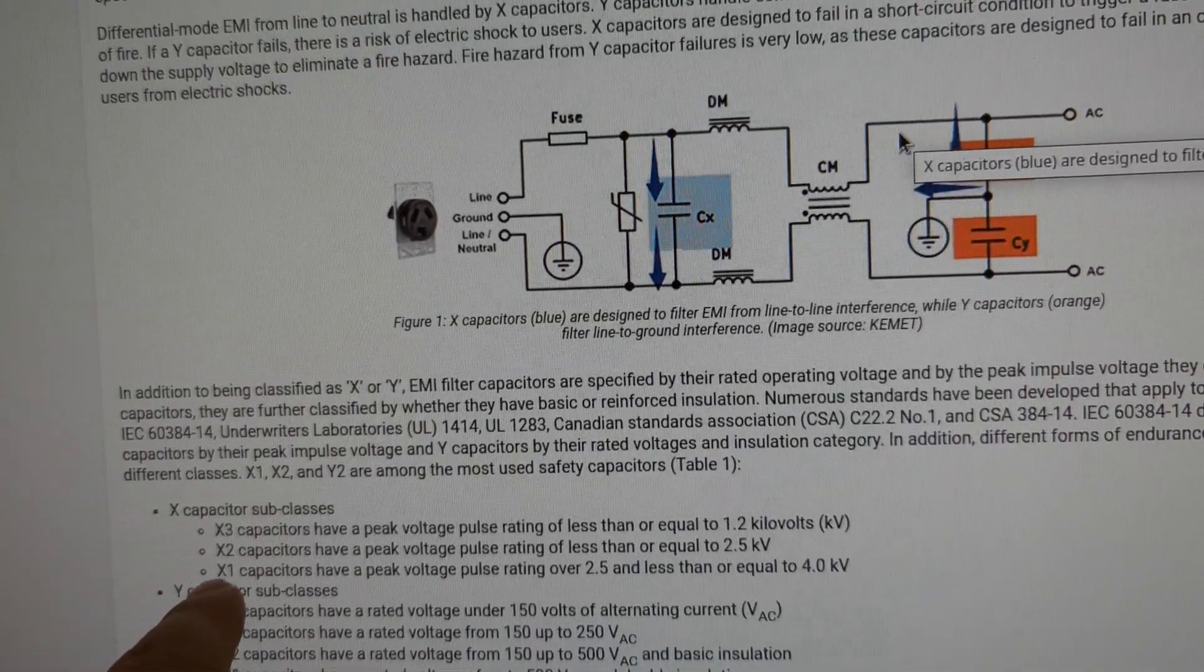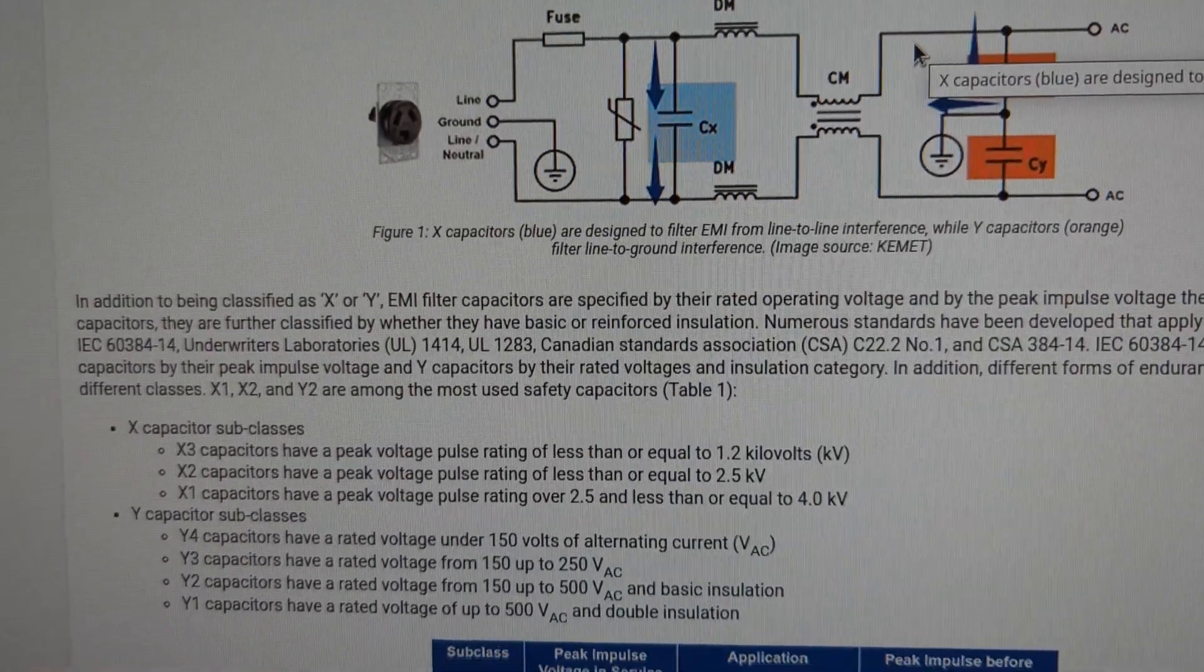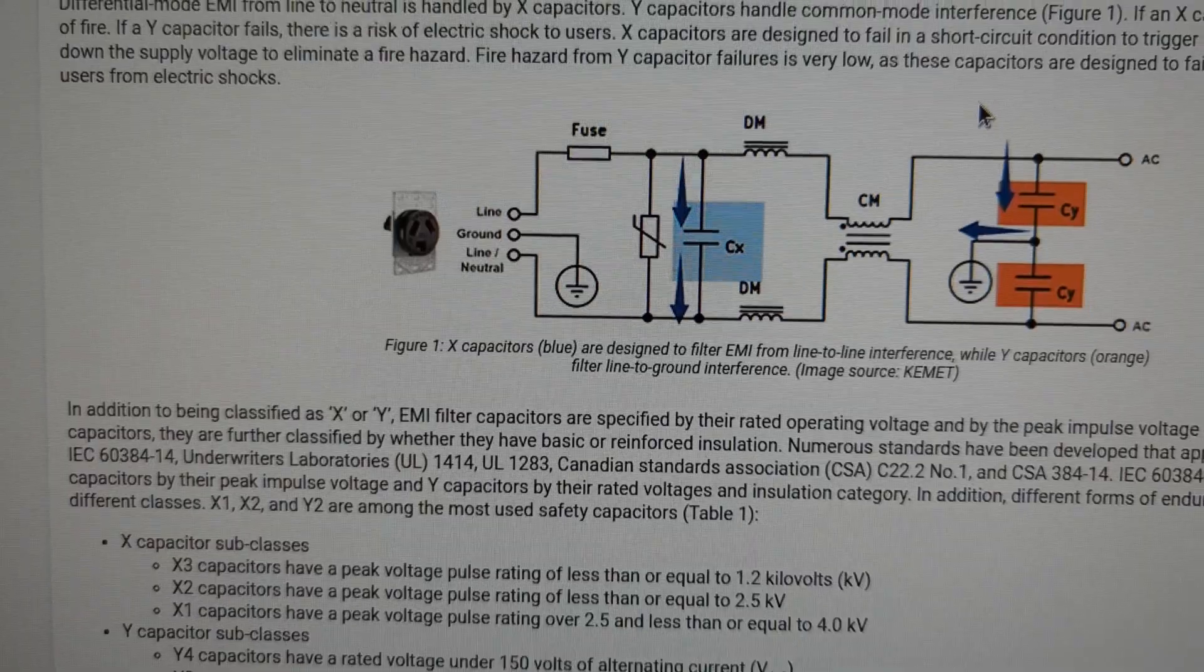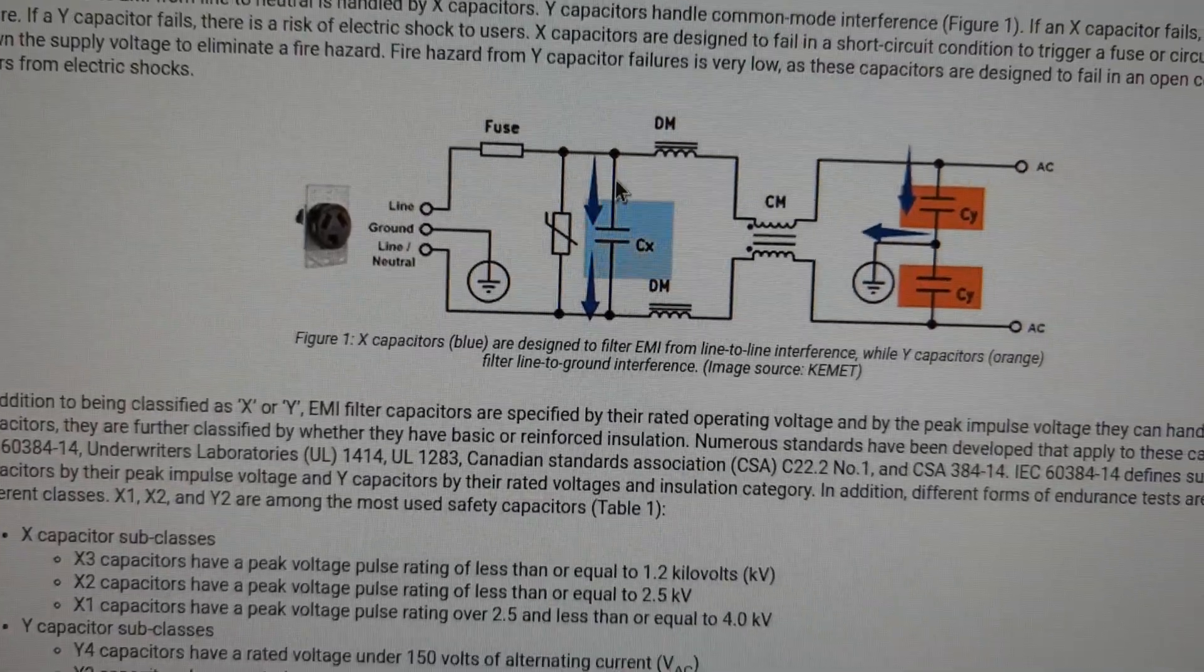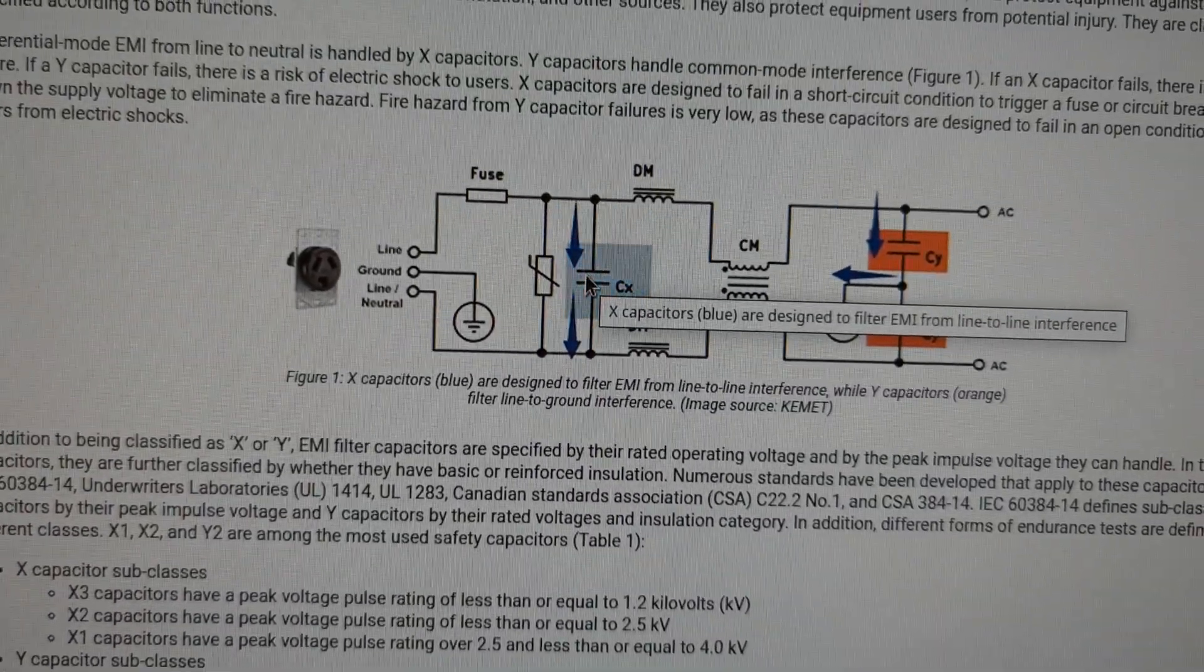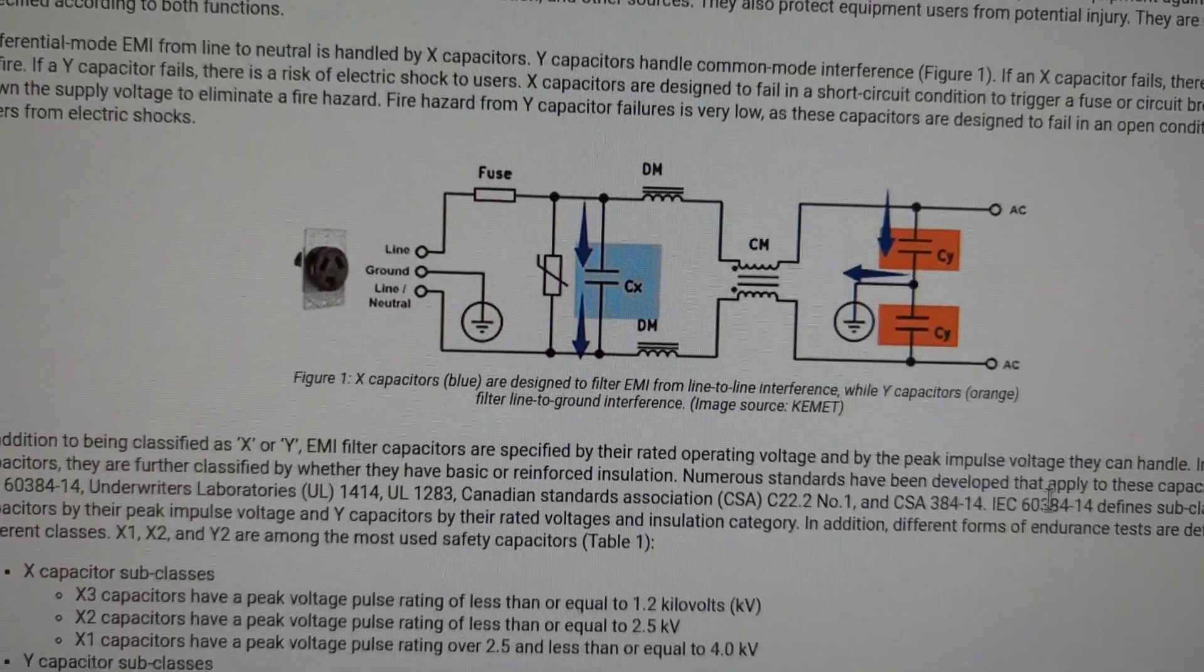a class X1 capacitor is rated up to 4kV as you can see here. So the special thing about these capacitors is that they have a predefined failure mode, which is not exactly typical for film capacitors.